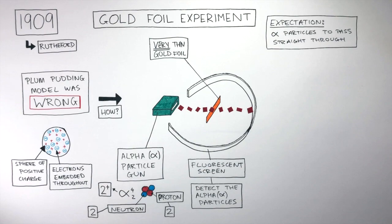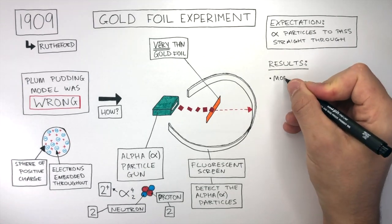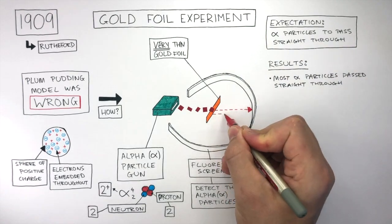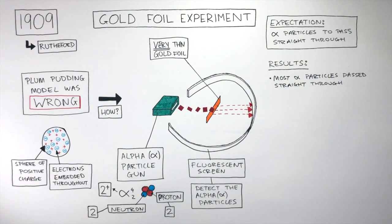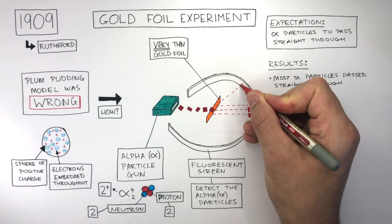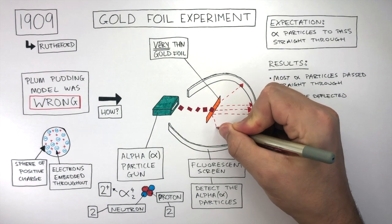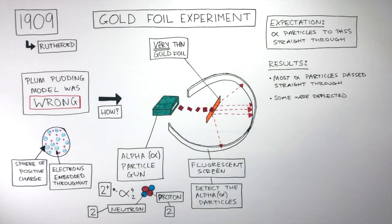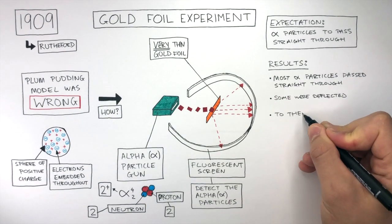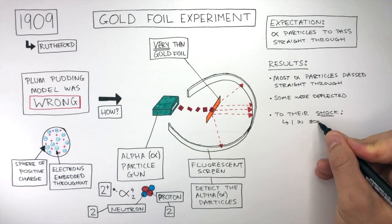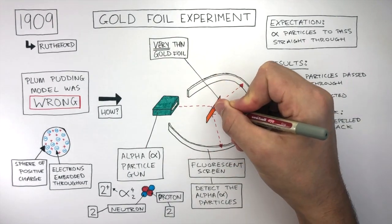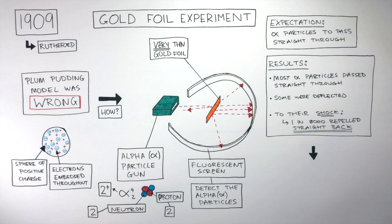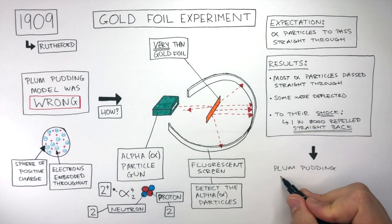So what did actually happen? The results were: most alpha particles passed straight through, as shown by these dashed red lines, which reached the fluorescent screen and were detected. Some were deflected as they passed through the gold foil, going off in different directions. And to their shock, one in 8,000 were repelled straight back. Because their results were different to their expectations, this told them the Plum Pudding model is wrong.